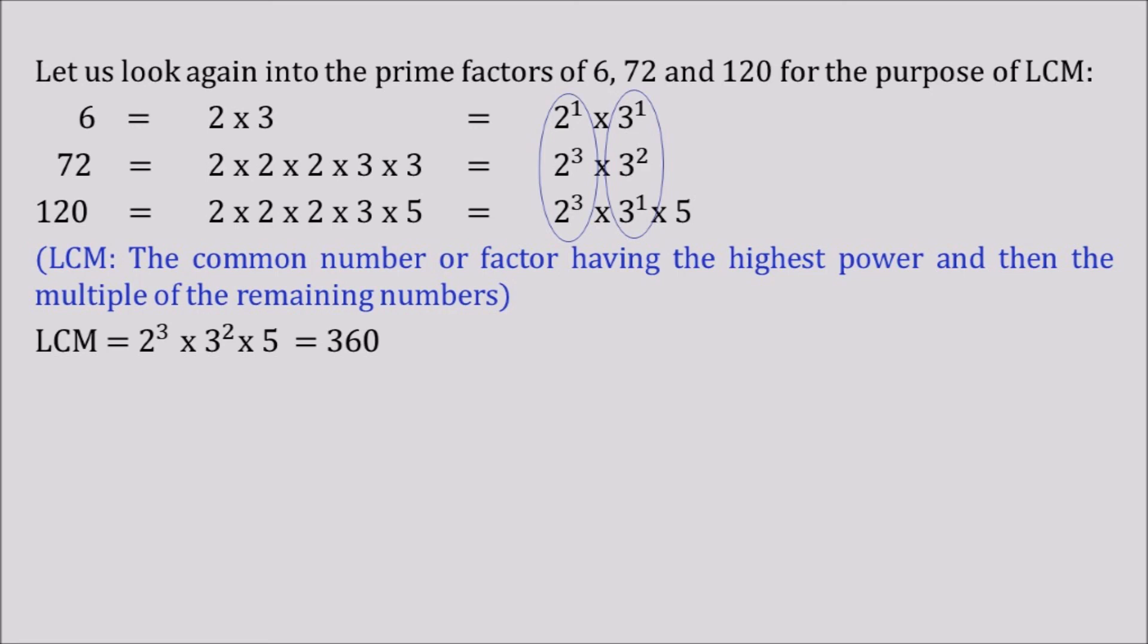So LCM is equal to 2 to the power 3 into 3 to the power 2 into 5 which is nothing but 360. Therefore LCM of 6, 72 and 120 is 360.